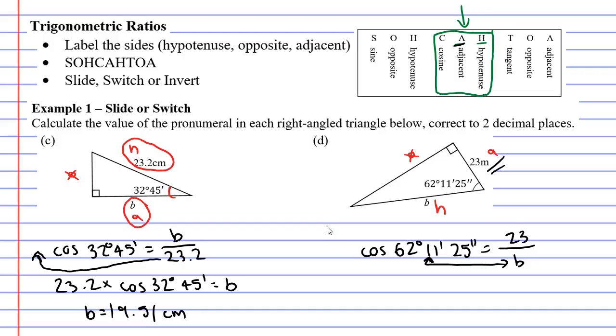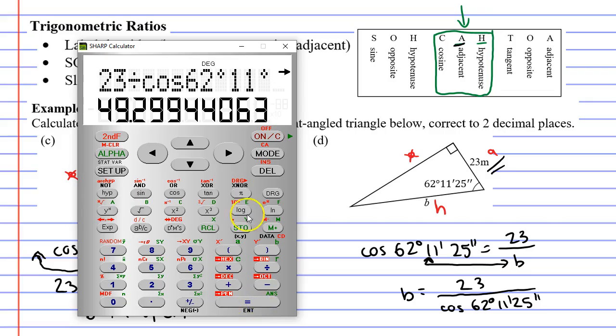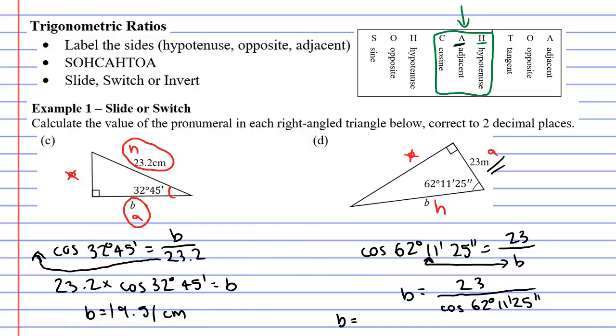All right, let's do that. The B is now on the left side and it's going to be 23 over cos 62 degrees, 11 minutes, 25 seconds. Bringing up our calculator this time. This will equal 49.29. This will actually round up to 49.30. We'll write that over here. B equals 49.30. And this one is in metres, correct to two decimal places.